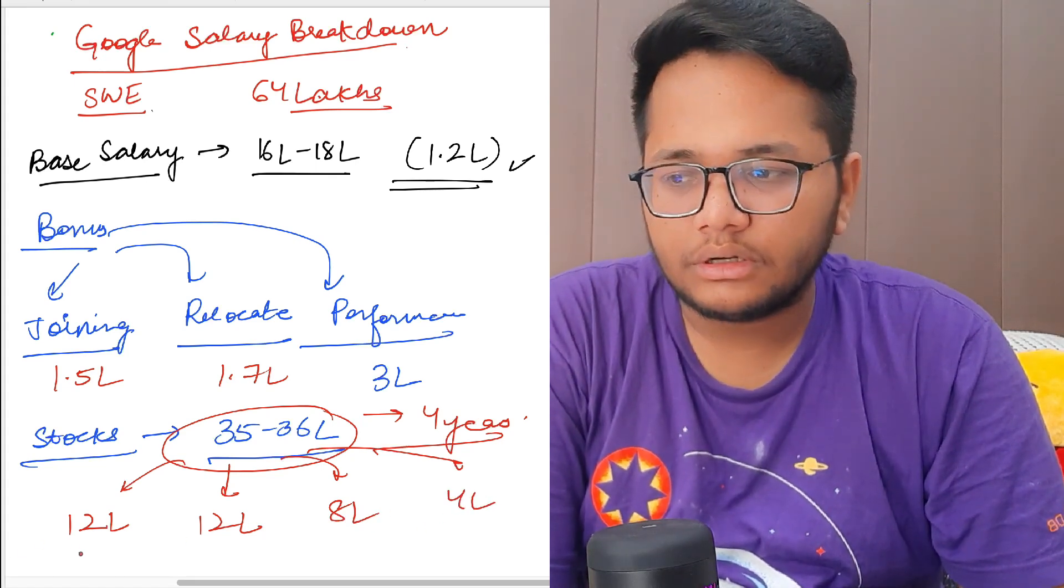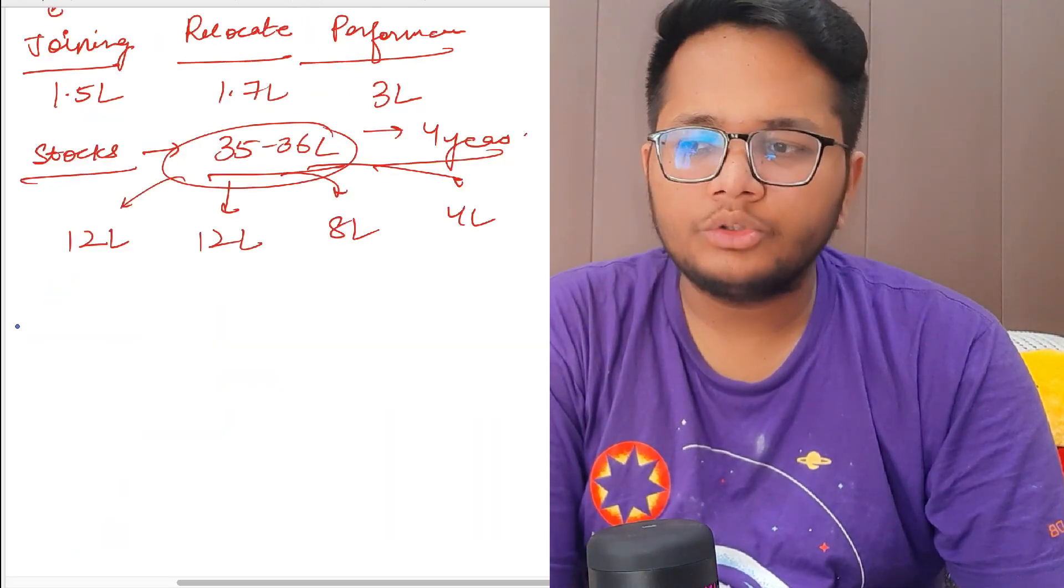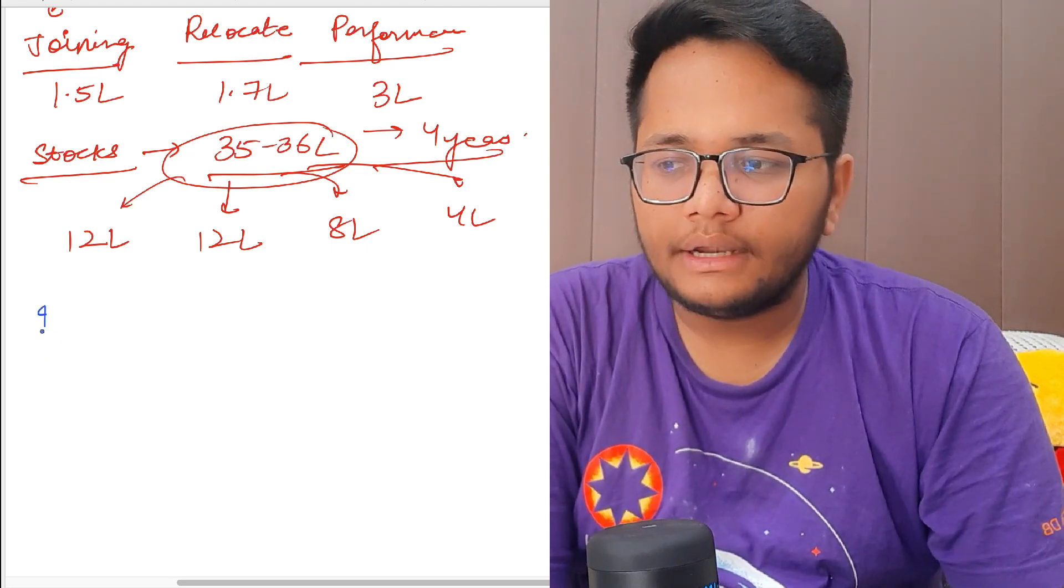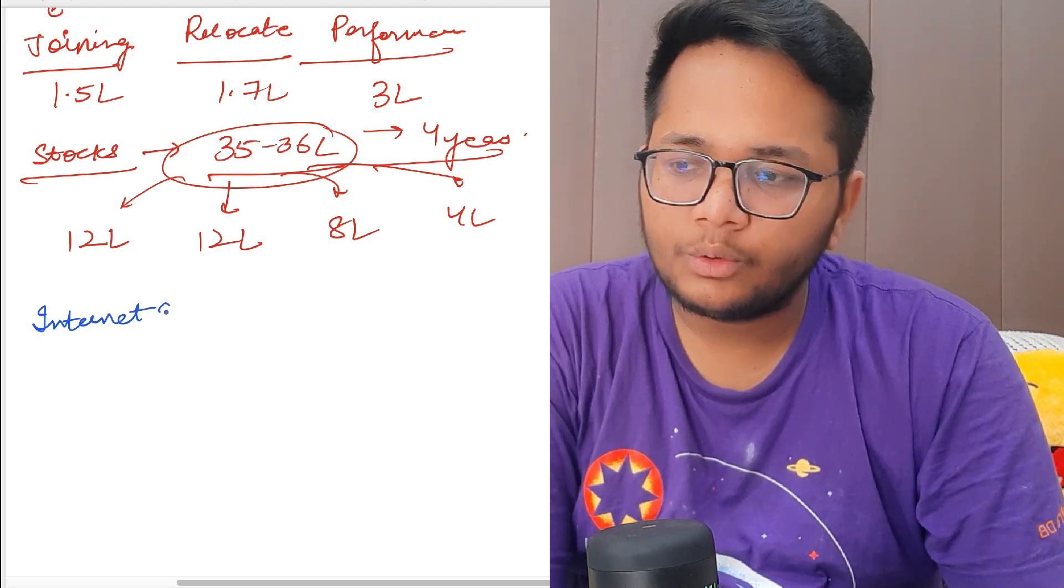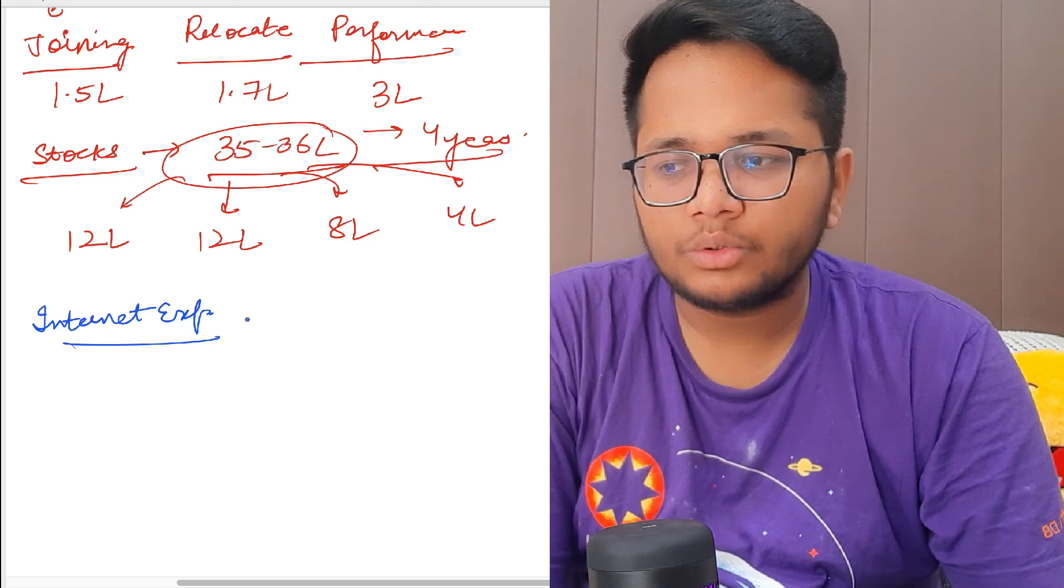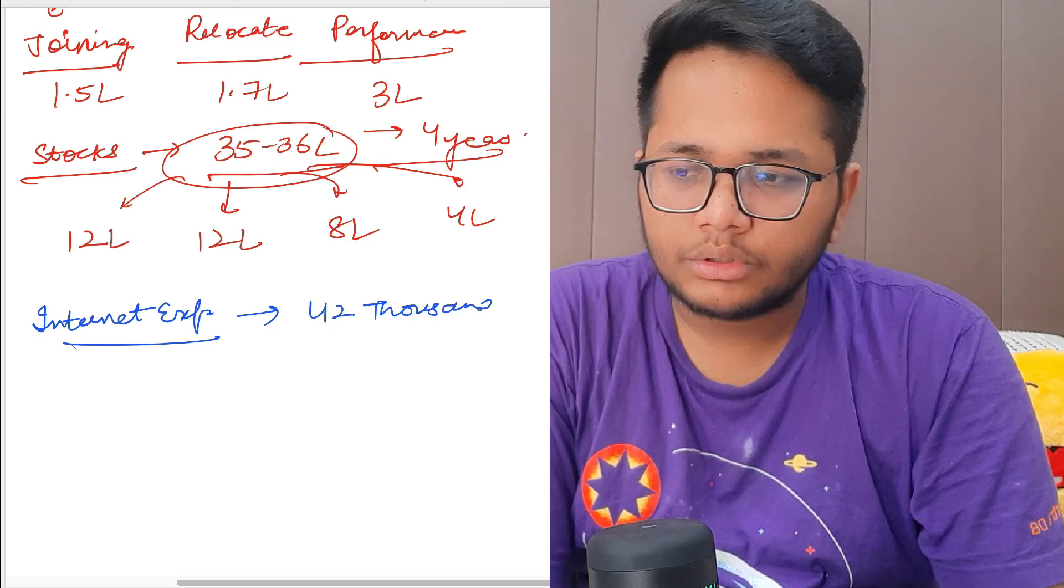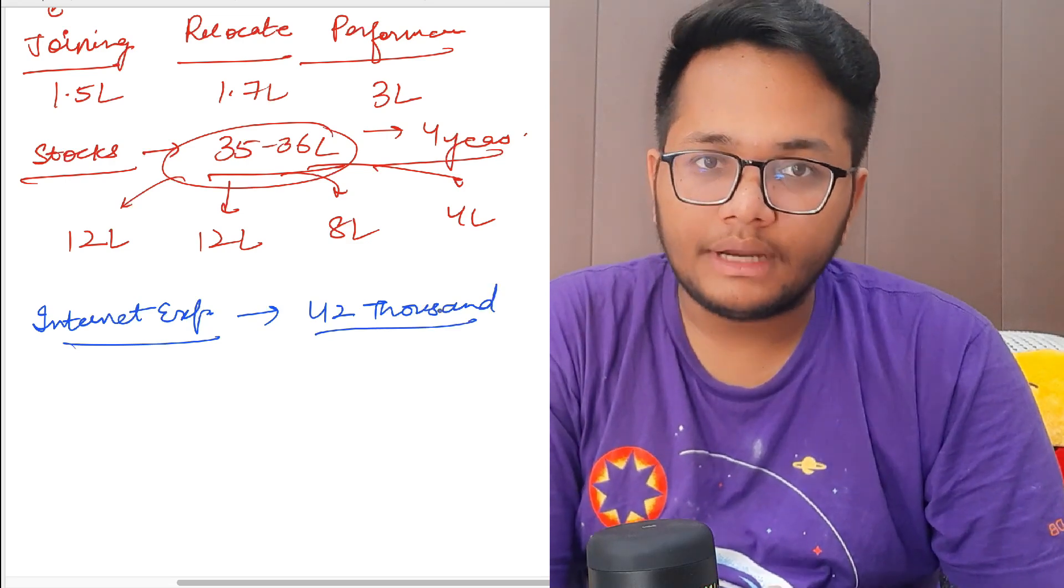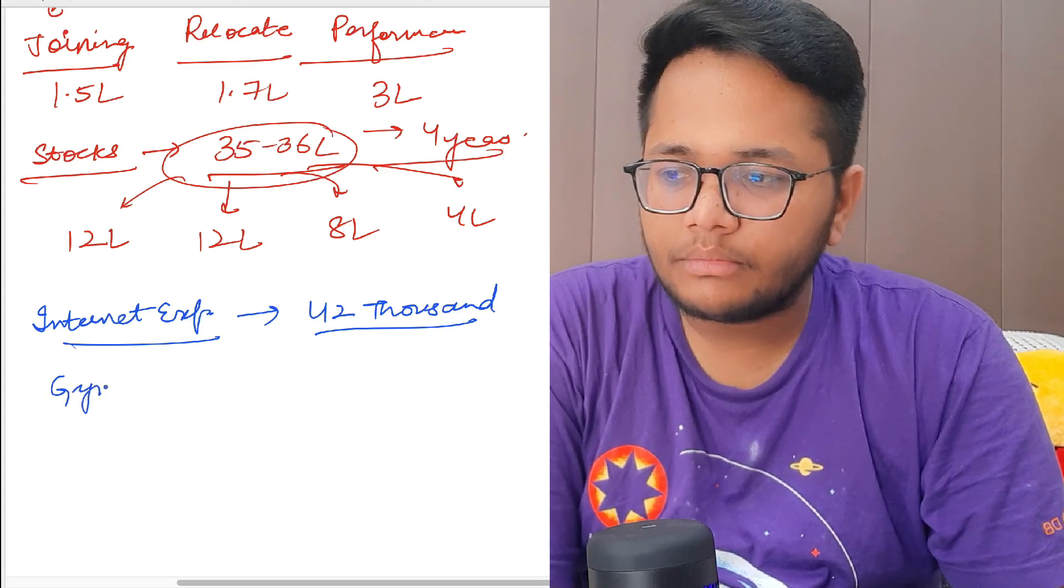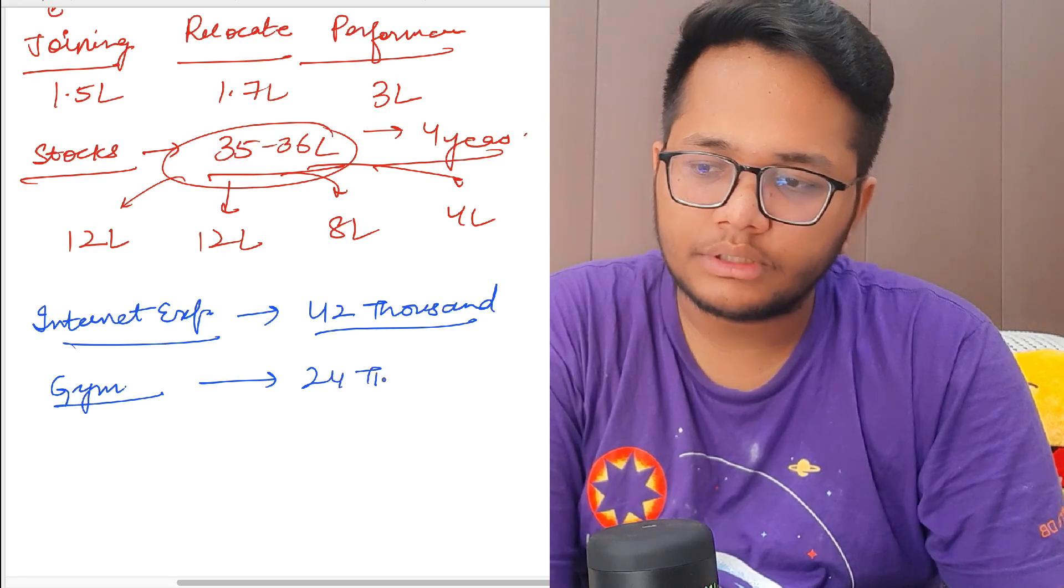Apart from this, there are certain other benefits. You will be getting some internet expenses. The internet you use, you get around 3000 to 3500 per month, so the total amount that comes out to be 42,000 annually. Apart from that there is a gym allowance, which is 2000 per month. In a year you get around 24,000 for gym.